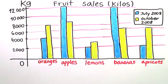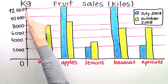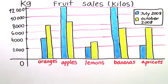Look at this bar chart closely and study the title, the key, and the axis. The title says fruit sales in kilos. So we're looking at how many kilos of which fruit was sold in two given months.